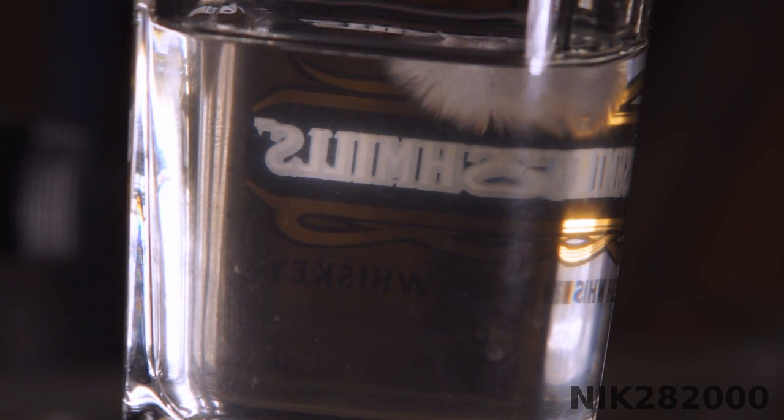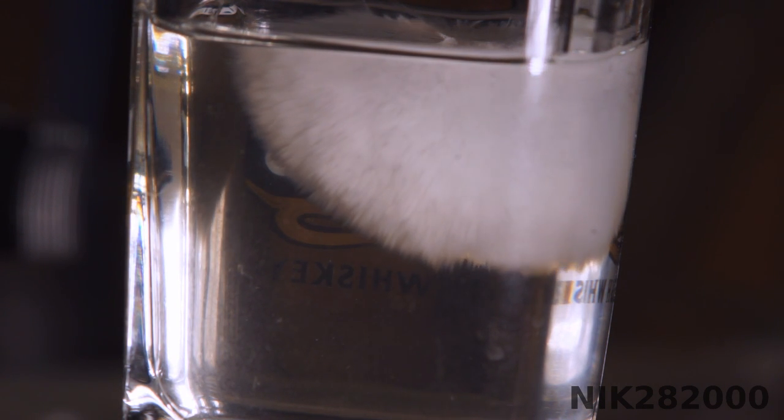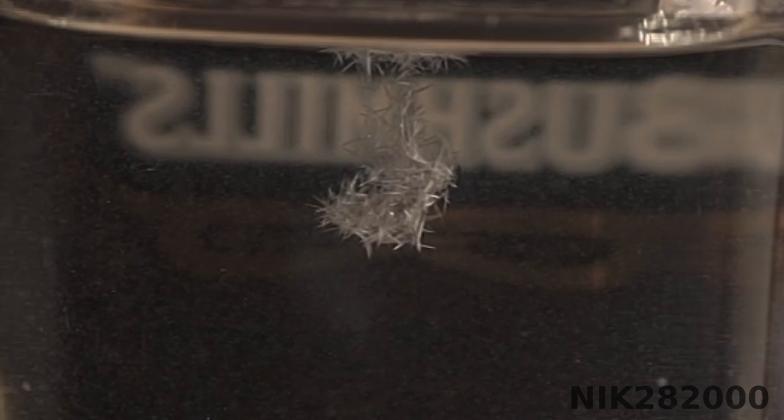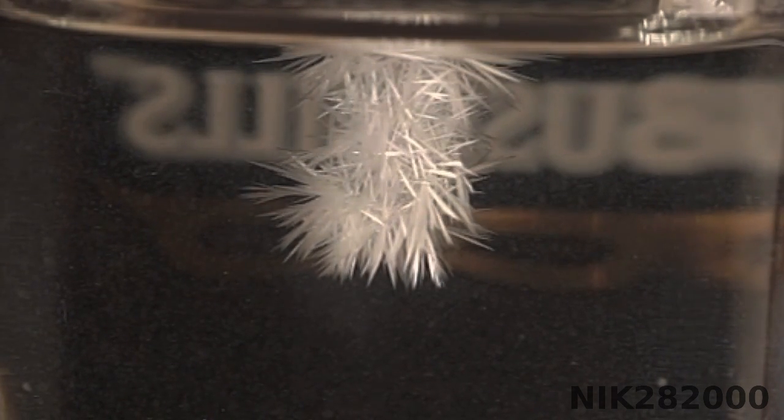These fast growing crystals are made by dissolving sodium acetate into water and making a supersaturated solution. This is done by heating up the water and dissolving more sodium acetate than is normally possible with cool water.